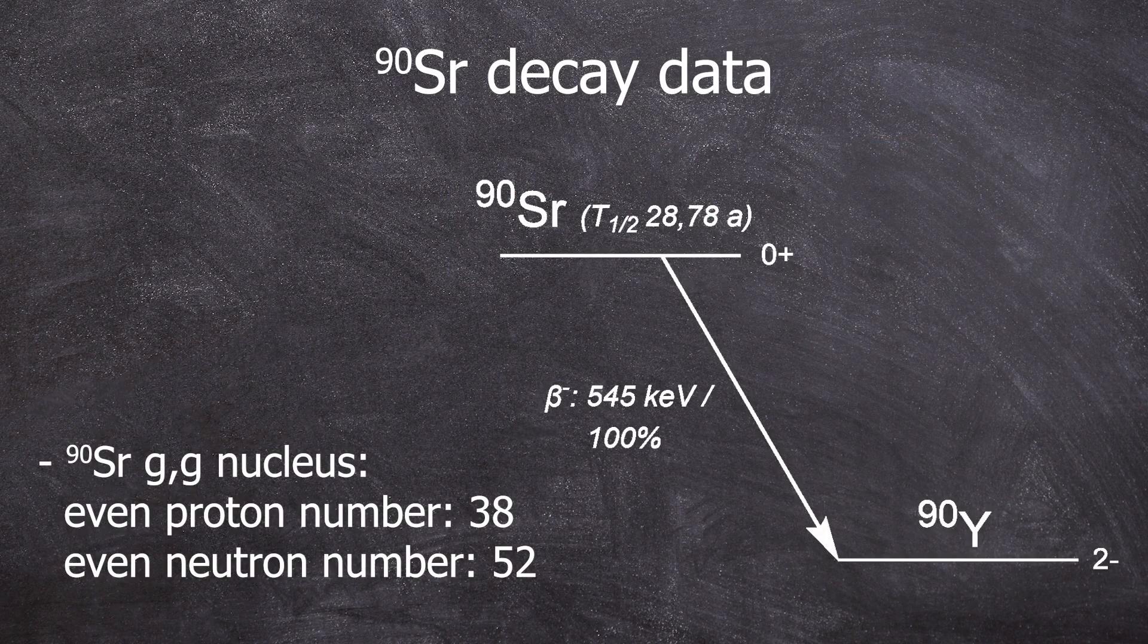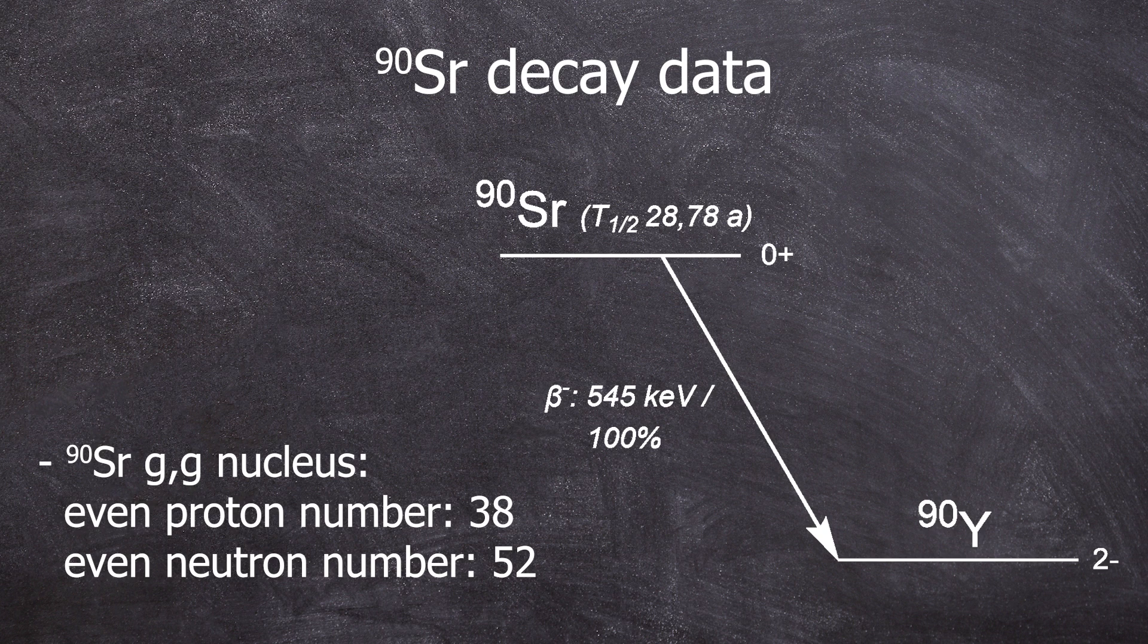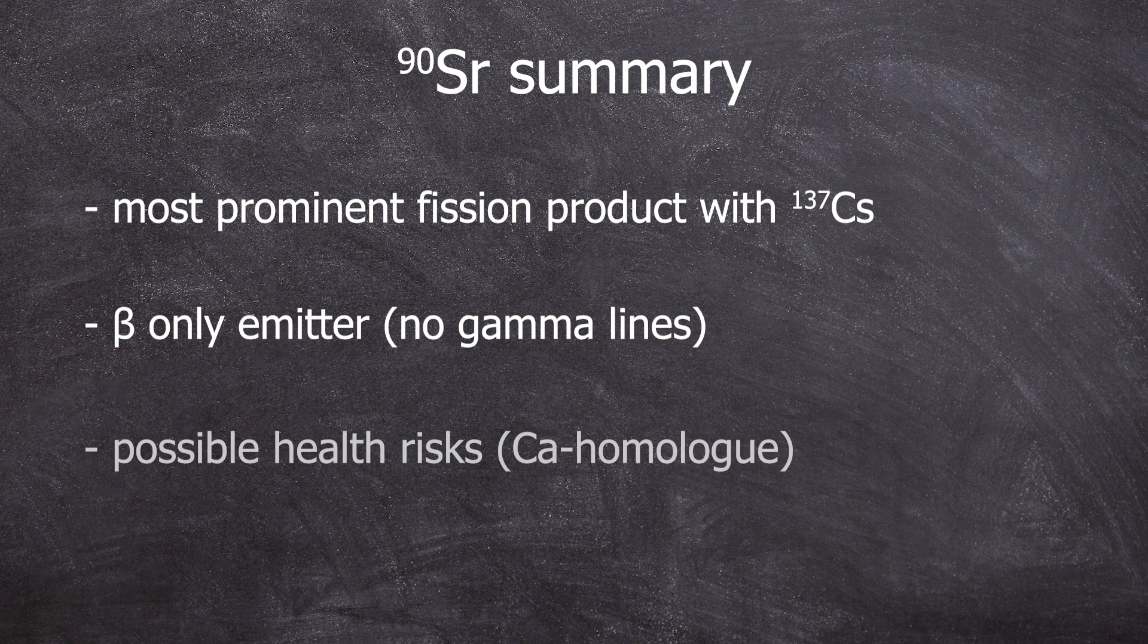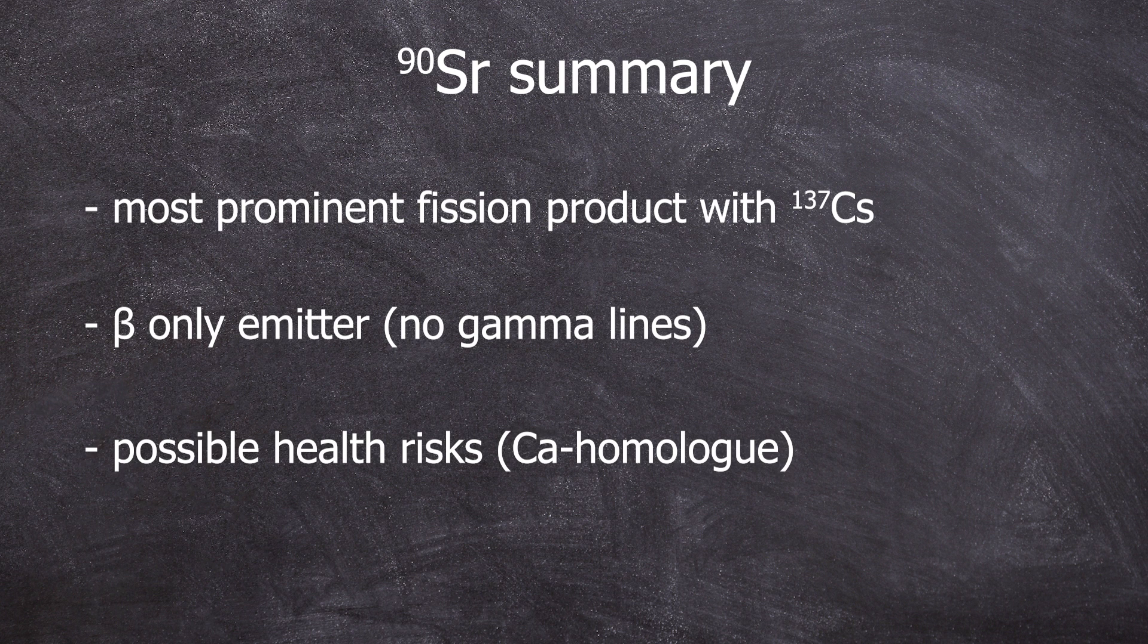The decay scheme for the strontium-90 decay is actually quite straightforward for a beta decay. And you can see the non-existence of any gamma lines associated with the strontium-90 decay. There is so much more to say about strontium-90 and actually about all the other radionuclides, but this video series is meant as a brief overview.